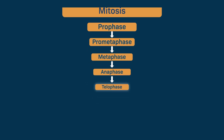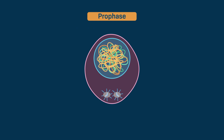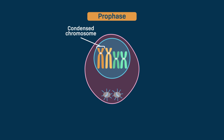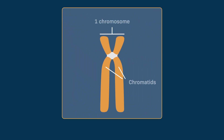During prophase, the chromosomes condense. This means that the long, unwound chromosomes are compacted until shorter individual structures become visible. Each one of these chromosomes has two identical chromatids that are held together at the centromere.